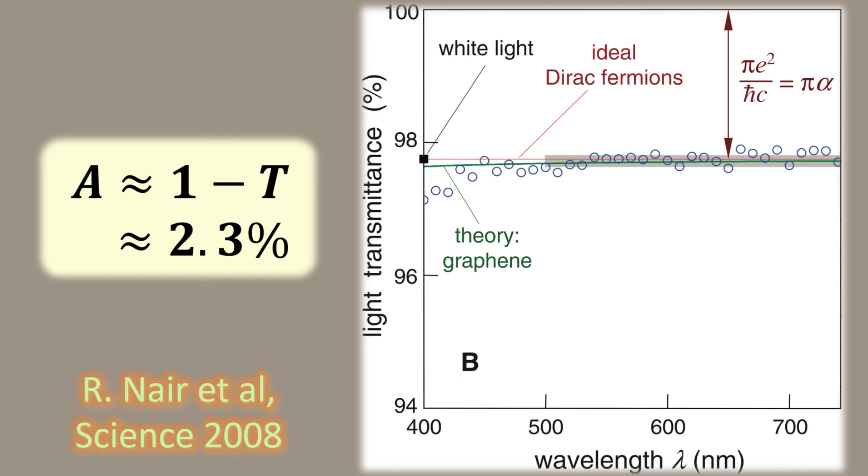Indeed, the measured absorbance is about 2.3 percent across a wide range of wavelengths across the visible spectrum, confirming the theoretical prediction. But how does the fine structure constant emerge in the light absorption of graphene?